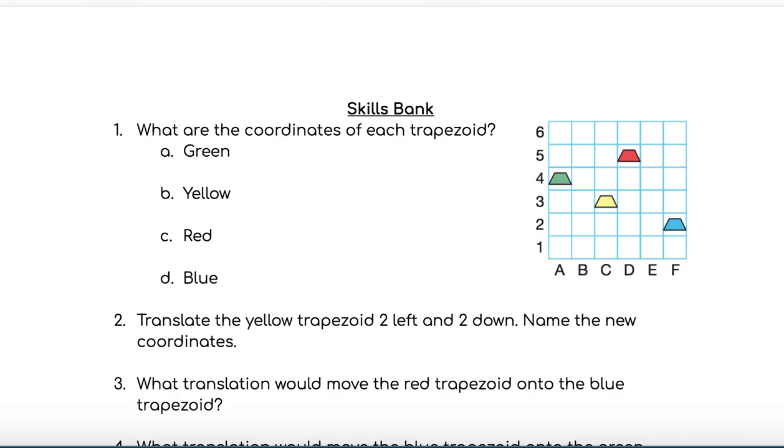The first question asks what are the coordinates of each trapezoid on the grid? Remember, when we're completing coordinates you need to first describe the coordinate along the x-axis or across the bottom, followed by the coordinate on the y-axis or up and down the left side.